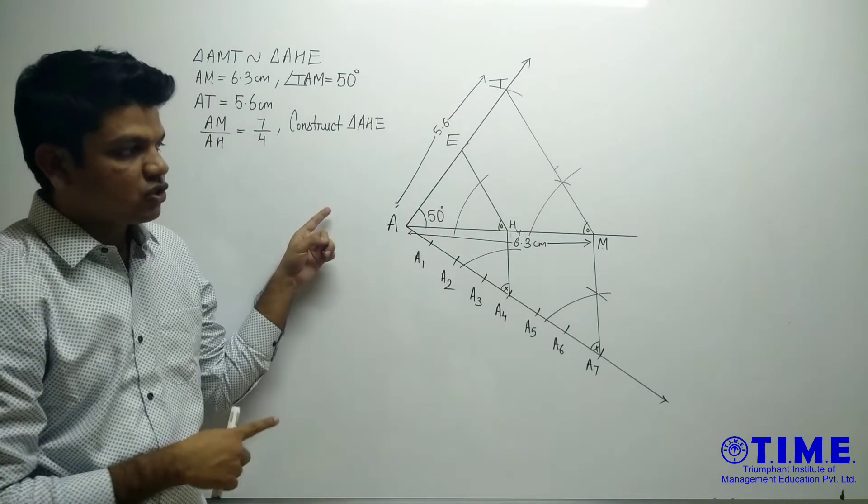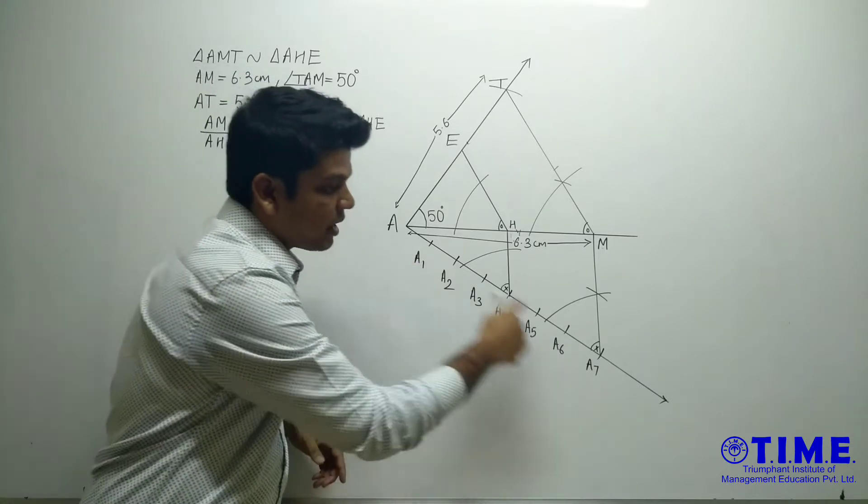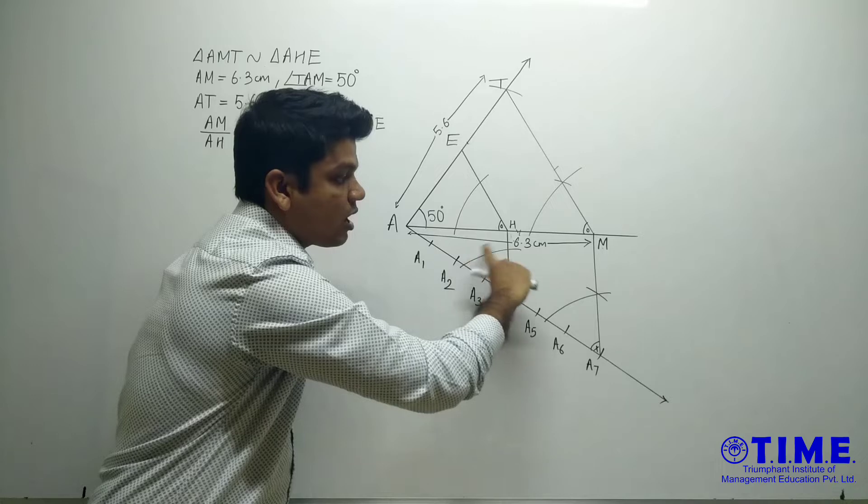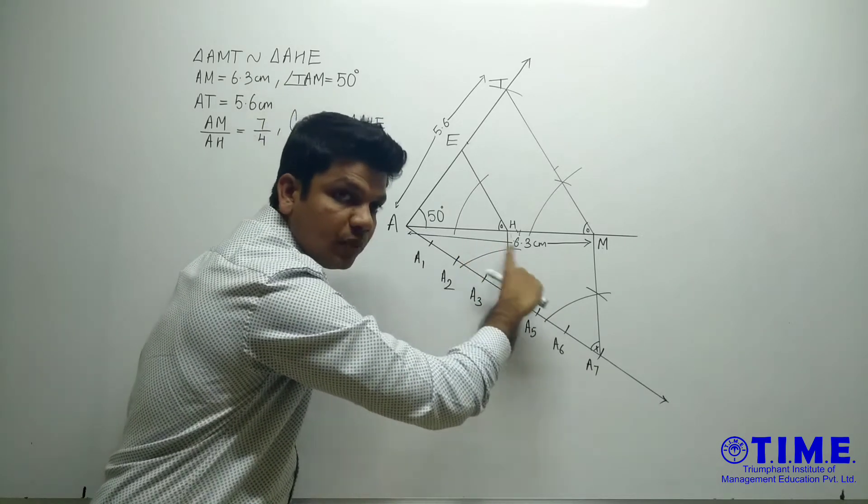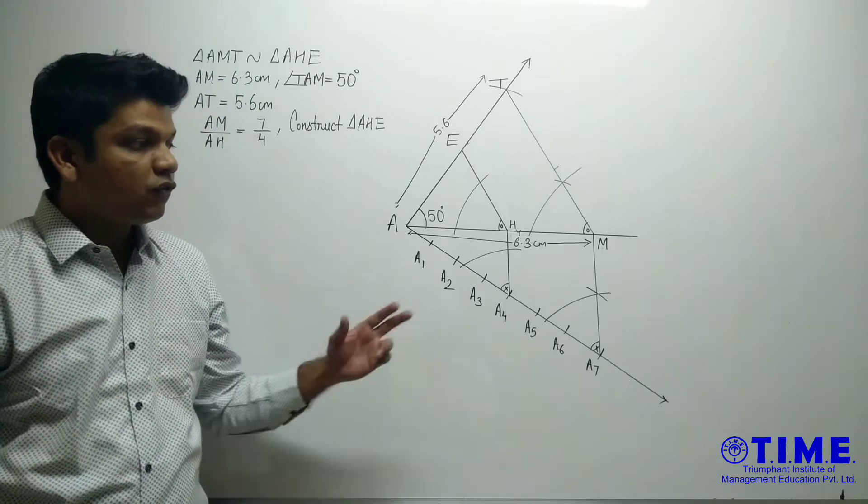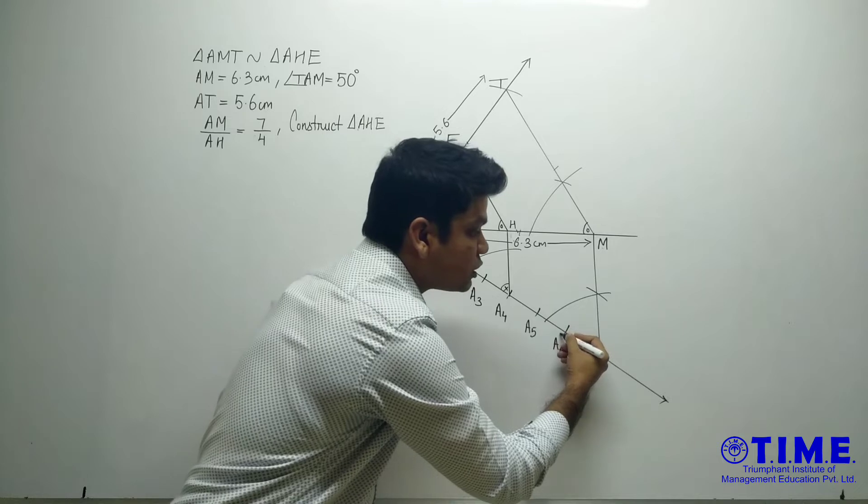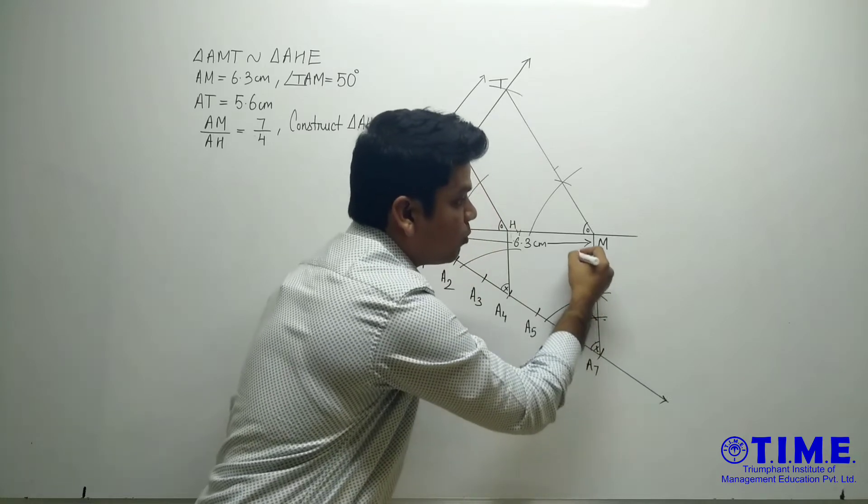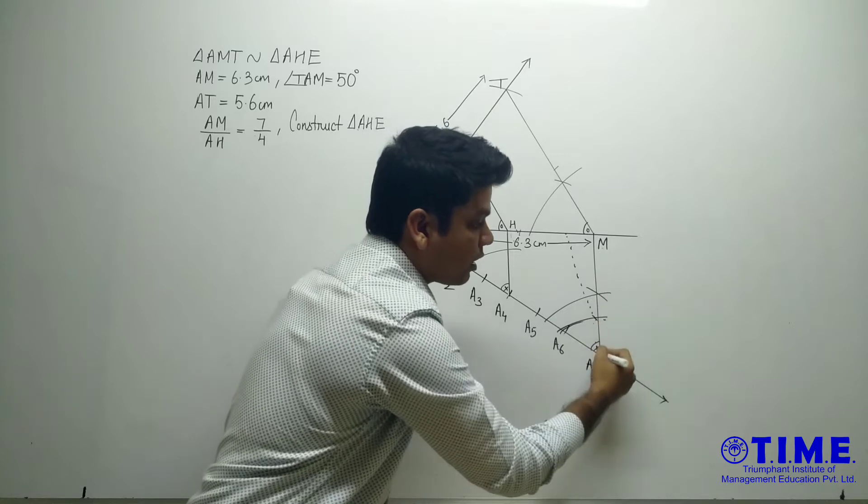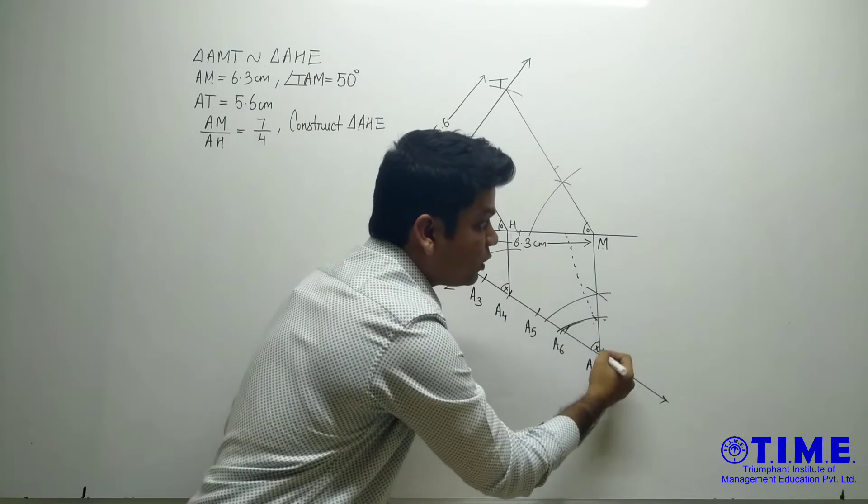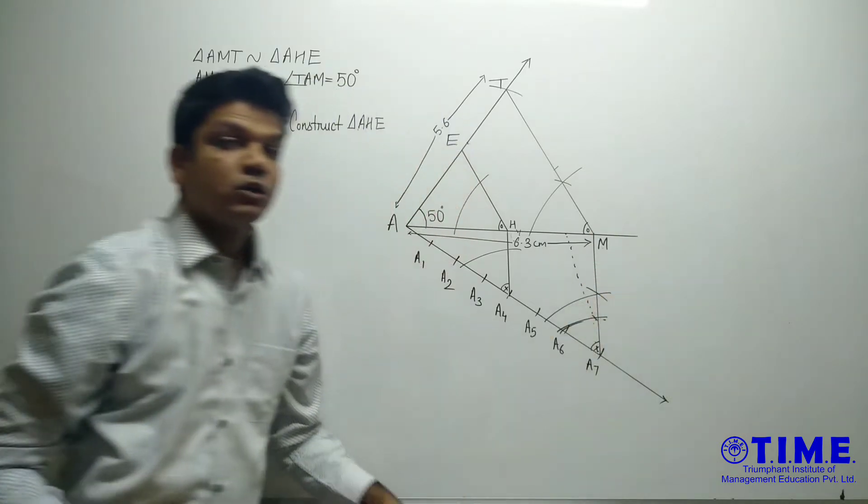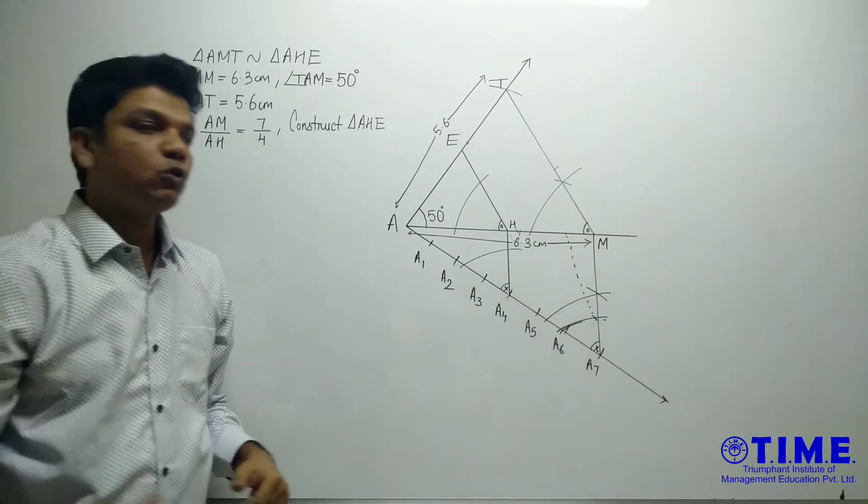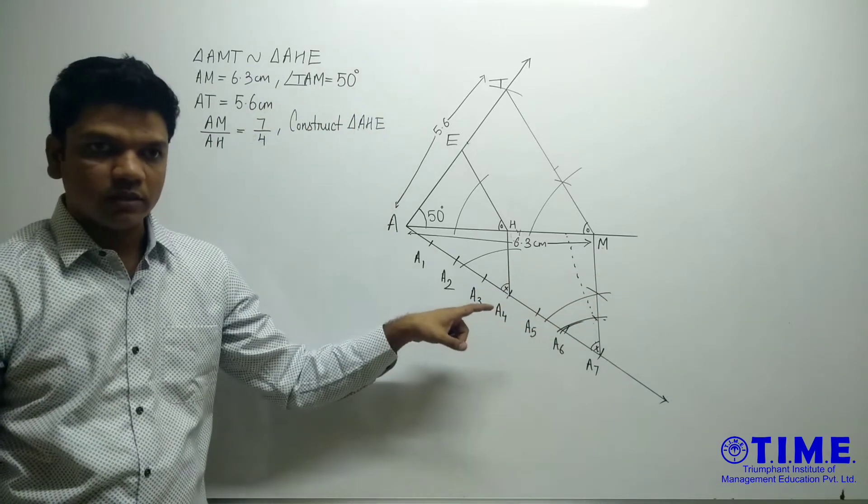So for that, while constructing this triangle, what things you have to keep in mind? When we draw these parallel lines, you have to keep in mind that you take this arc. This arc should not be a smaller arc, this should be a bigger arc. Now what is the reason for that? If you make a slight mistake, if you draw a smaller arc and if you make a slight mistake, this will bend more. That's why you should go for the bigger arc to avoid such things.